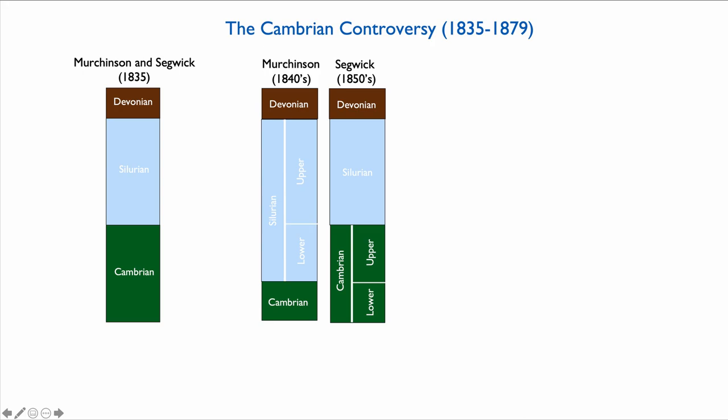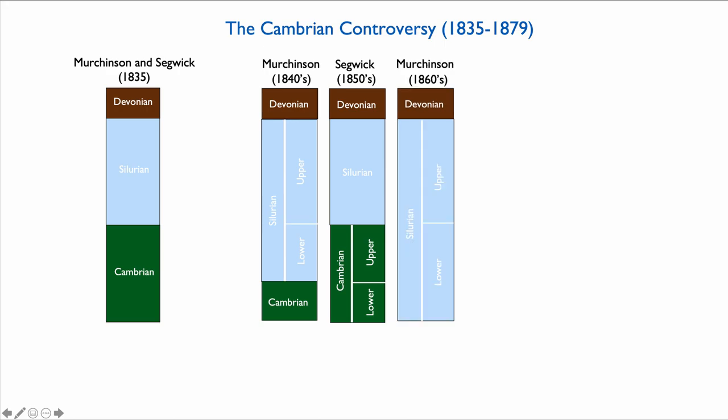Sedgwick did not like this solution because his Cambrian became a much less important subdivision of the rock record. His counter-solution in the 1850s was to say the Cambrian stays as defined, with a lower Cambrian, and the contested zone would simply be called the upper Cambrian. Murchison responded by ignoring everything Sedgwick had done, declaring the Cambrian irrelevant since it had no fossils, and extending the Silurian all the way down to the base of the Cambrian. At that point, the two friends were enemies, in one of the most embarrassing feuds in stratigraphy in the United Kingdom.